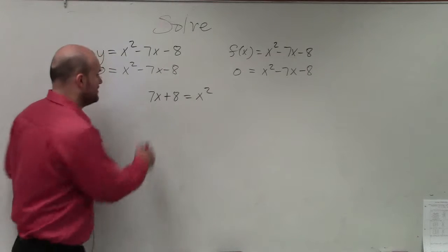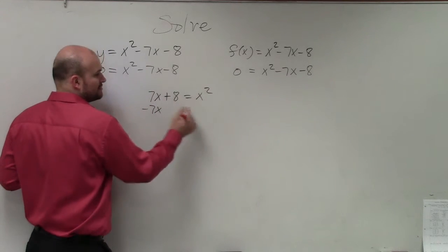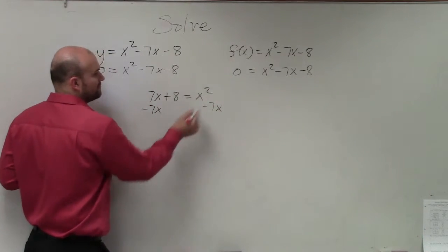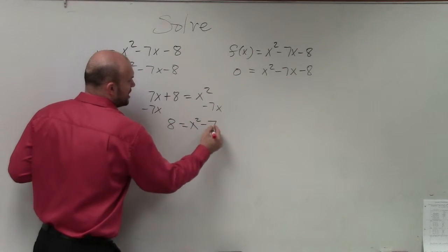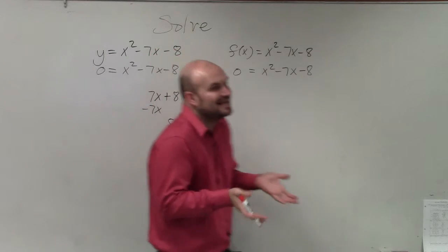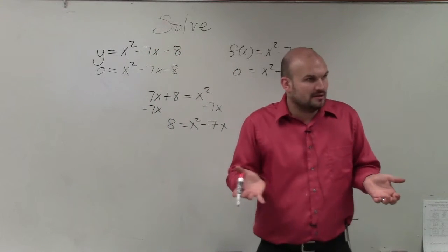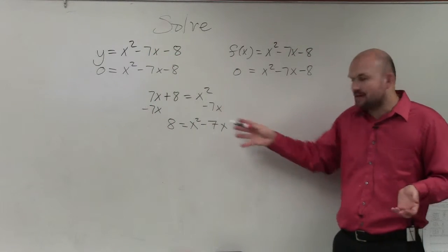So the difference is, when we get the variables on the same side, I'm always going to want my x squared to be positive, so I'm going to solve for the variables on the right side. Now, my variables are not like terms, meaning I cannot combine them. 1 is squared, 1 is linear. You can't combine them like we did.